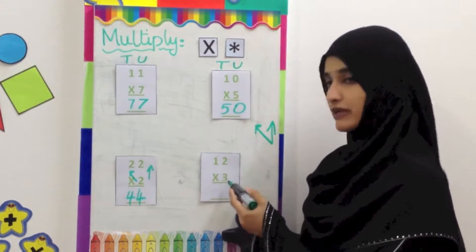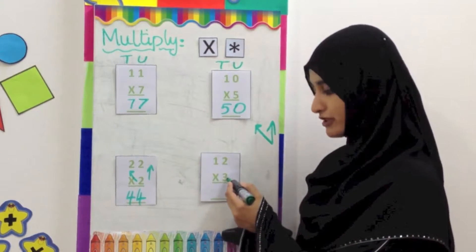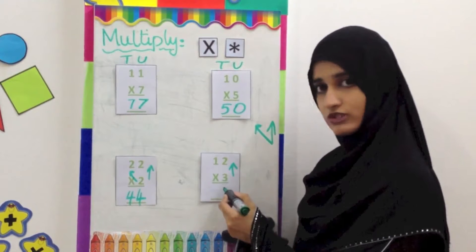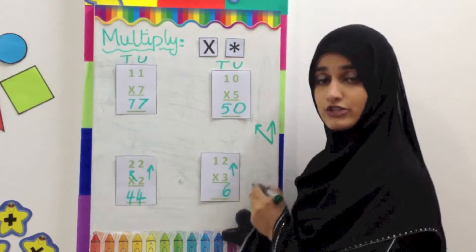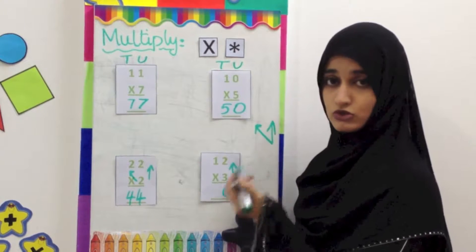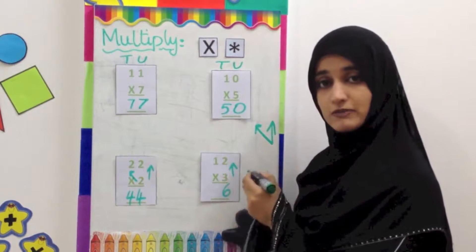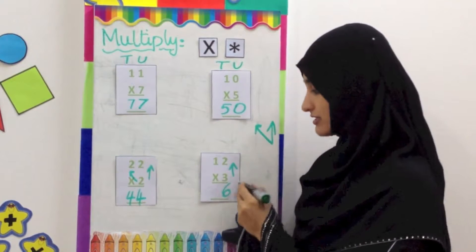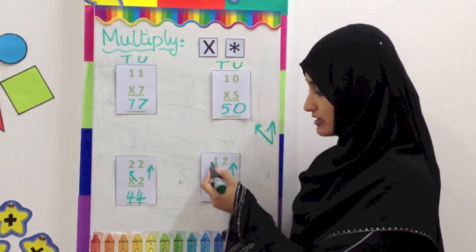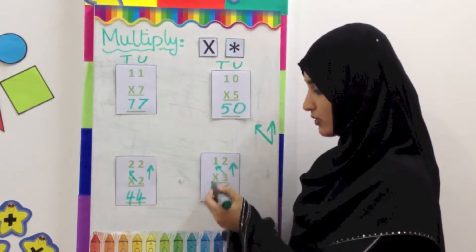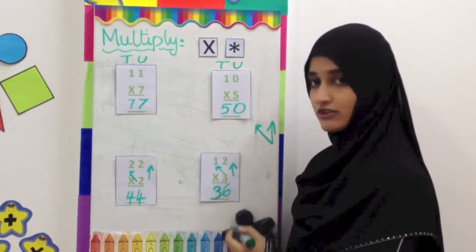12 multiplied by 3. You have this number 3 here. You are first going to multiply 3 with 2. 3 twos are 6. At this point it is important that you have learnt your times tables — all of them. 2, 3, 4, 5 is the best because then your multiplication is going to be much much easier. Now the 3 is going to be multiplied with the 1. 3 ones are 3. The answer is 36.